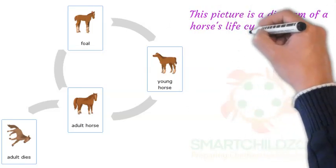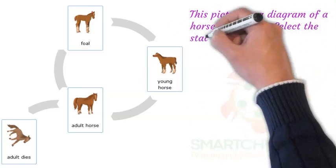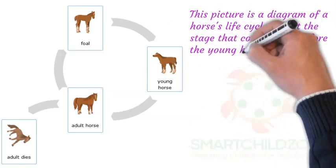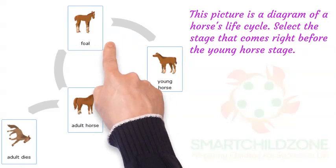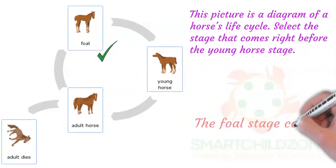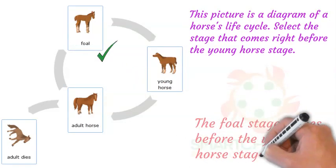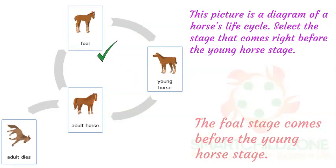This picture is a diagram of a horse's life cycle. Select the stage that comes right before the young horse stage. Find the young horse stage in the life cycle diagram and follow the life cycle backward. The foal stage comes before the young horse stage.